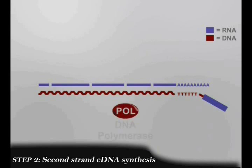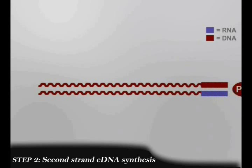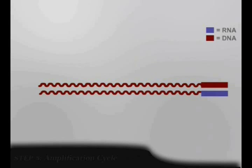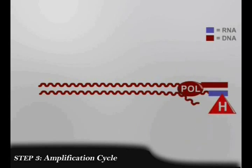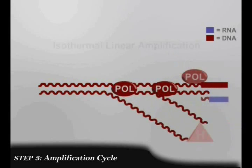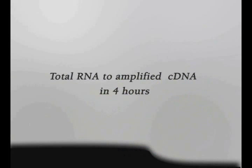RNA is fragmented using RNase H enzyme and the DNA polymerase enzyme helps to synthesize the second strand when the primer is introduced. In the amplification cycle, the above set of processes takes place continuously. This process to obtain the resultant cDNA happens for about 4 hours.